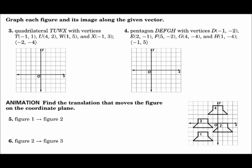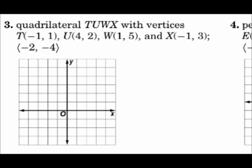Graph each figure and its image along the given vector. Number three: graph the quadrilateral with the given vertices and move it along the vector that goes negative 2 and negative 4. Remember, when a vector is written in component form, the first number tells you how far left or right and the second number tells you how far up or down.